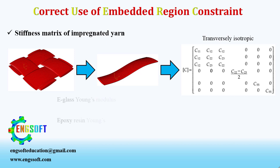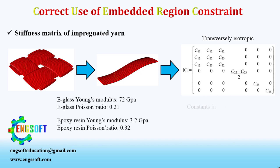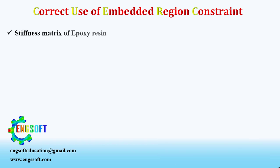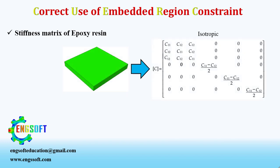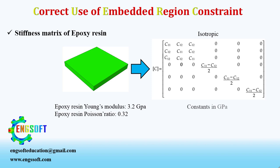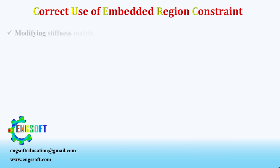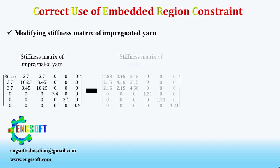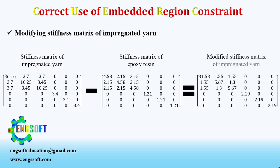This stiffness matrix can be computed using the mechanical properties of glass fibers and epoxy matrix. For the matrix part, we have epoxy resin, which is an isotropic material, and its stiffness matrix can be calculated using its mechanical properties. As a final step, you must subtract the stiffness matrix of the epoxy resin from the impregnated yarn, and enter this modified stiffness matrix into Abacus as the mechanical property for the impregnated glass yarns.